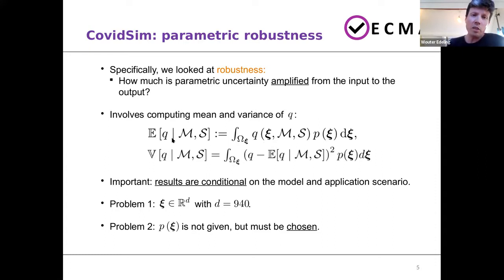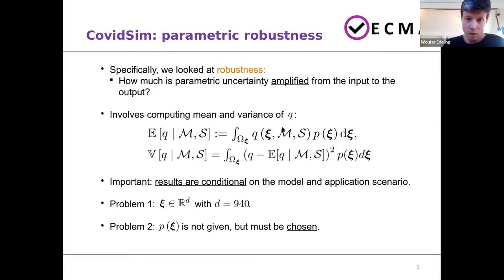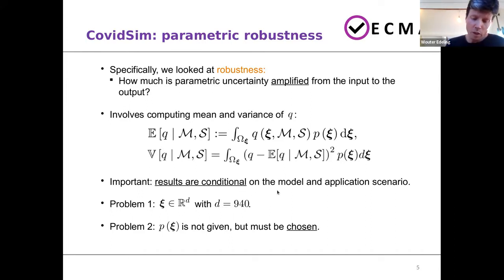What I want to emphasize is that everything I'm going to show you is conditional on the model — in this case COVIDSIM — but also on the application scenario on which the model is applied. Now, there are two main issues here. The first one is that COVIDSIM has a lot of input parameters; if you count all of them mechanically, you get to 940, although that number is effectively a lot lower, as I will show you.